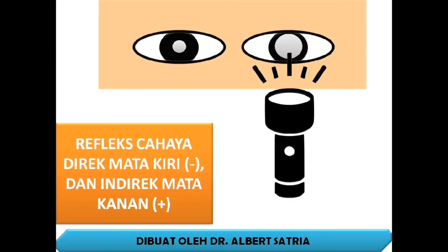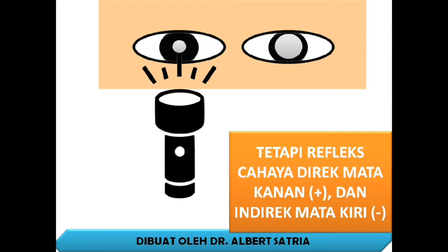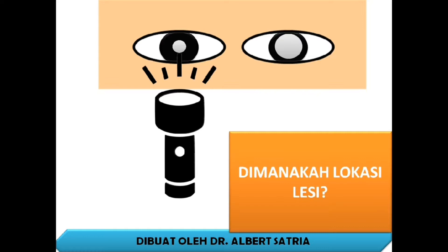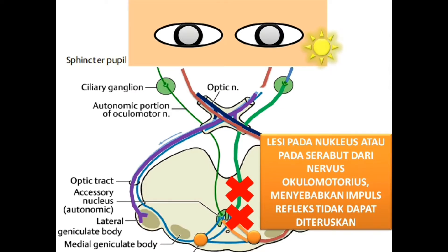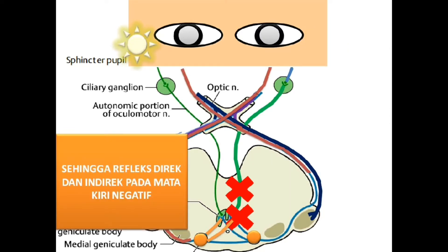Kasus kedua: refleks cahaya direct mata kiri negatif, tetapi indirect mata kanan positif. Refleks cahaya direct mata kanan positif dan indirect mata kiri negatif. Jadi refleks cahaya hanya ditemukan pada mata kanan. Lesi berada pada nukleus atau serabut nervus oculomotorius. Lesi pada nukleus atau serabut dari nervus oculomotorius akan menyebabkan impuls refleks tidak dapat diteruskan, sehingga refleks direct dan indirect pada mata kiri negatif.